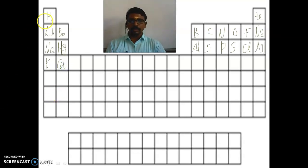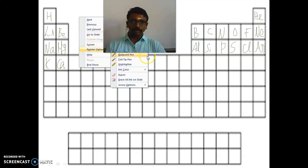So this is the first 20 elements, that is Hi Hero Listen BBC Not On Friday. That is Hydrogen, Helium, Lithium, Beryllium, Boron, Carbon, Nitrogen, Oxygen, Fluorine, Neon, Sodium, Magnesium, Aluminium, Silicon, Phosphorus, Sulfur, Chlorine, Argon, Potassium, Calcium.